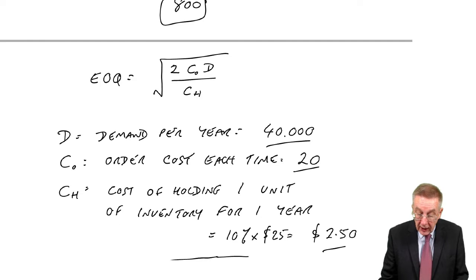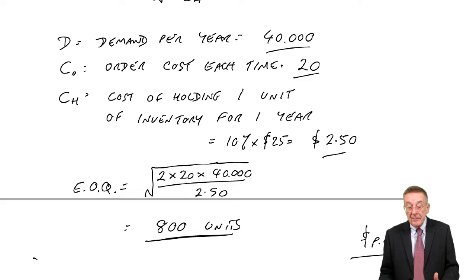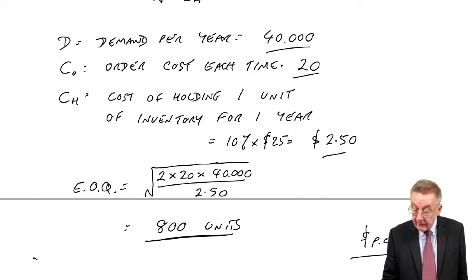And if you remember, for example, we found the economic order quantity was 800. And also, for the exam, make sure you can show the costings if it's required.